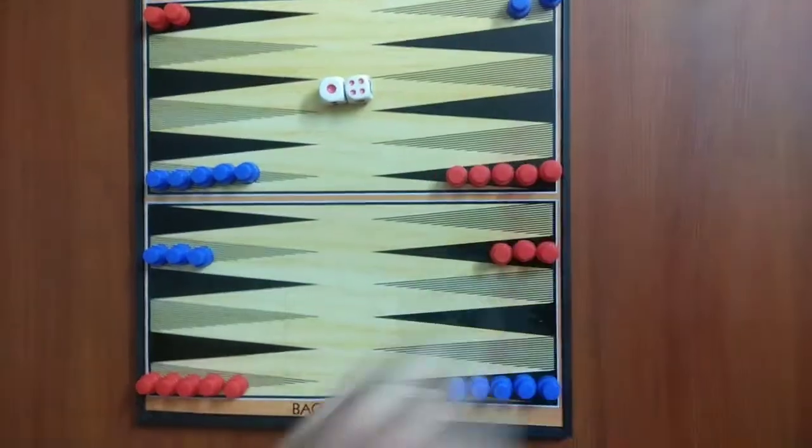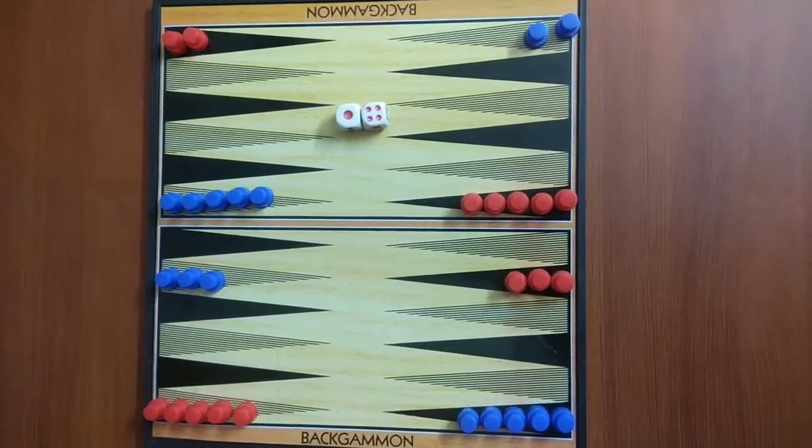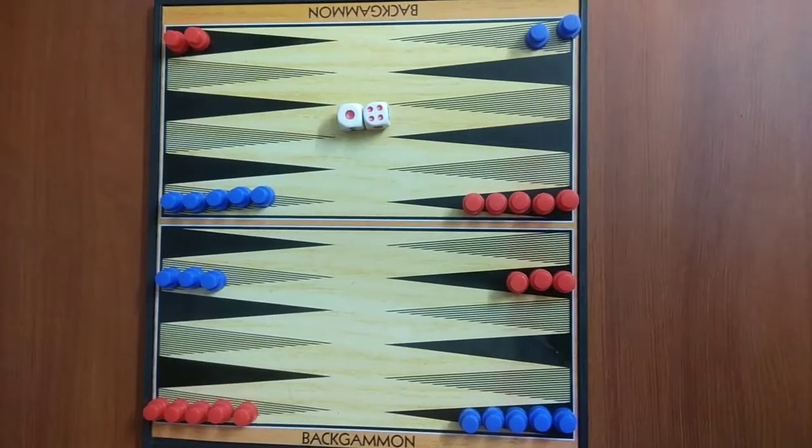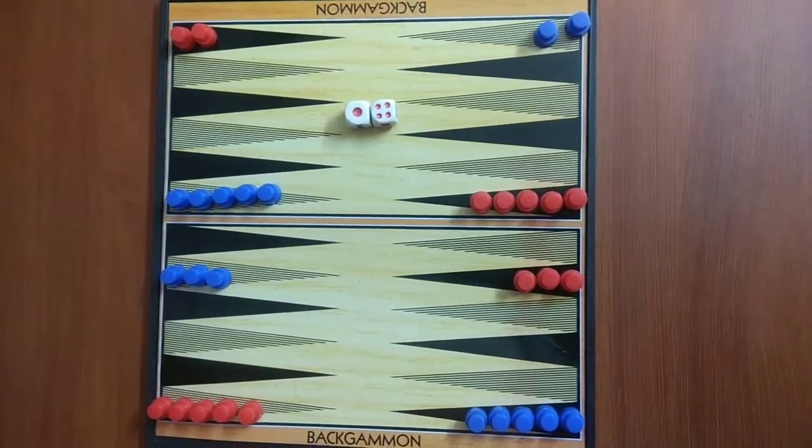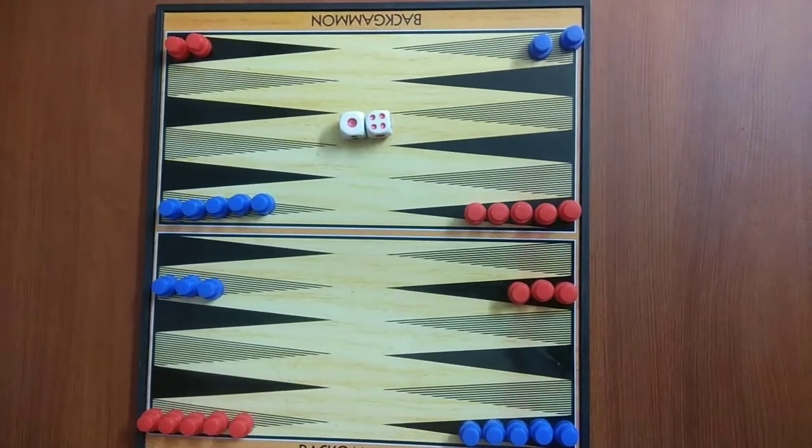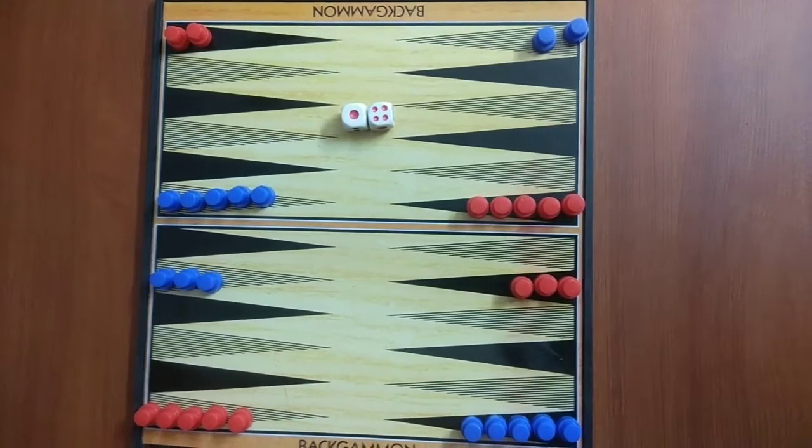To set up the board like this, each player must place 2 checkers on their 24 points, 3 checkers on his 8th point, 5 checkers on his 13th point, and 5 checkers on his 6th point.